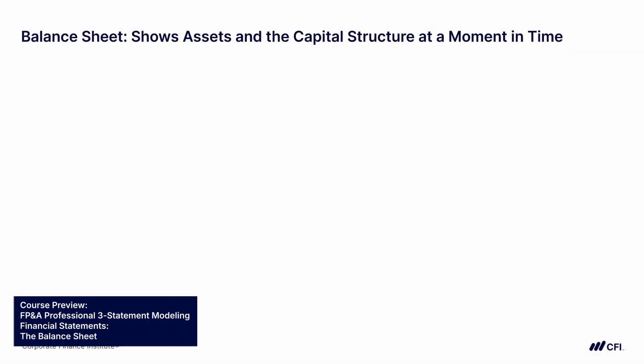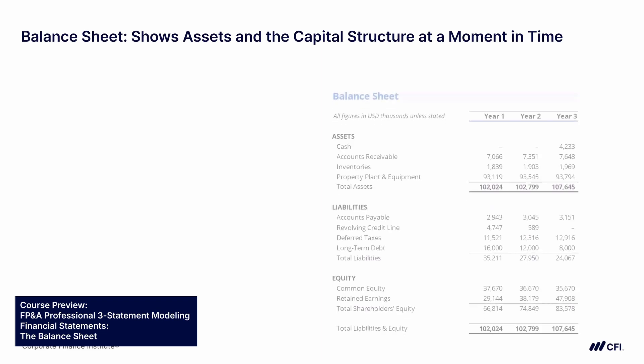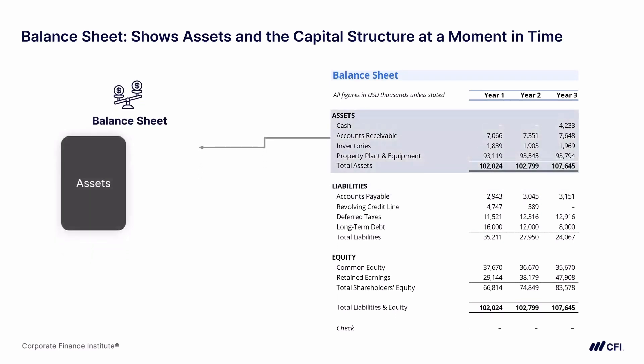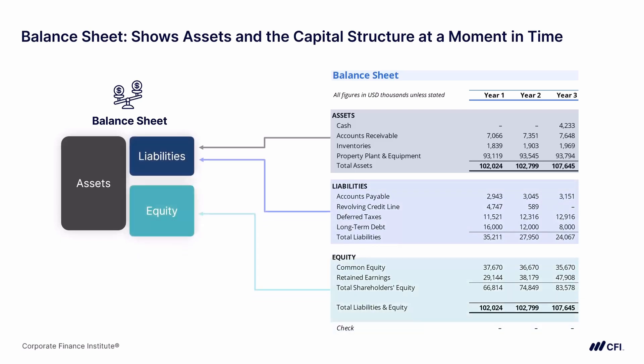Now let's take a look at the balance sheet, which shows the company's assets and capital structure as of one moment in time. At the top of a balance sheet would be the company's assets, followed by its liabilities, and finally the company's equity. You can think of assets as what the company owns, liabilities as what the company owes, and equity as the remainder — or what's left over.